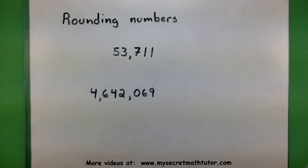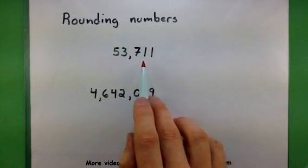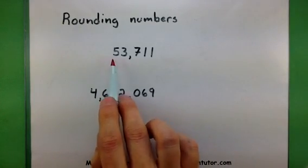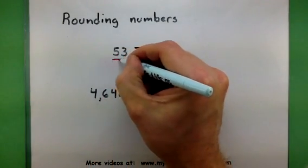Let's see how this process works out with these two examples. So in this first number, I want to round it to the 10,000 spot. Well, as I look at my number, the digit in the 10,000 spot is this 5 here.